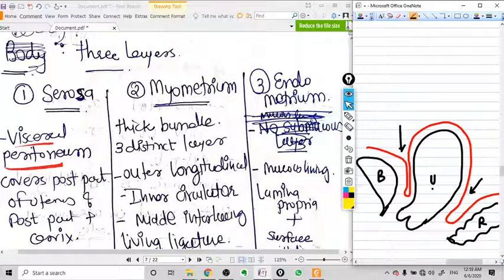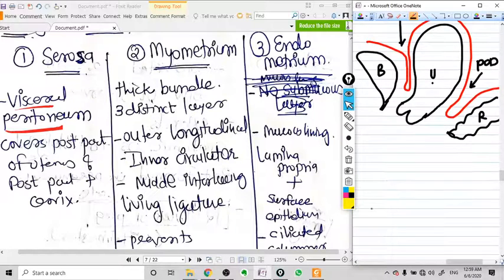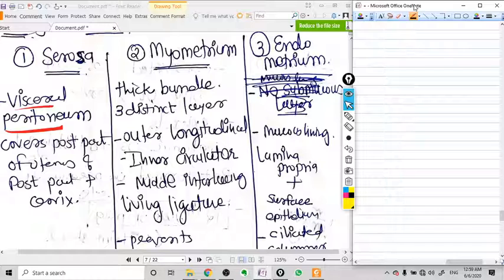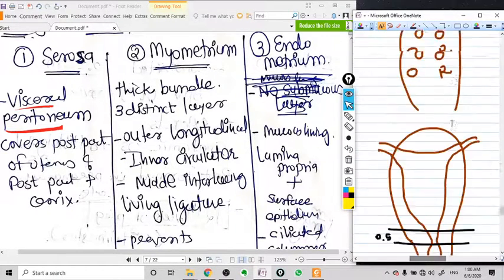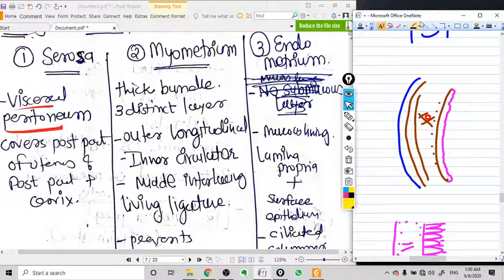Another very important layer is myometrium. All three layers are very important, but myometrium has another level of importance because it's a living ligature.